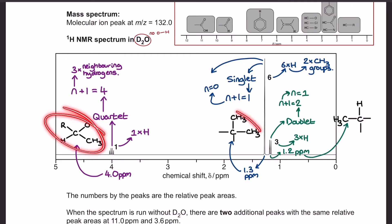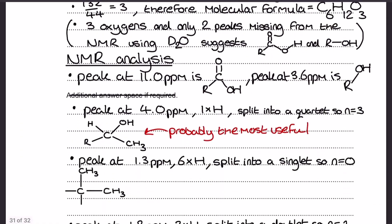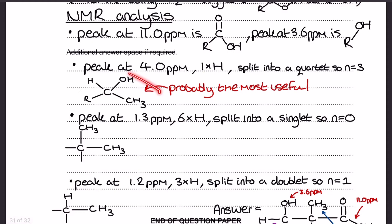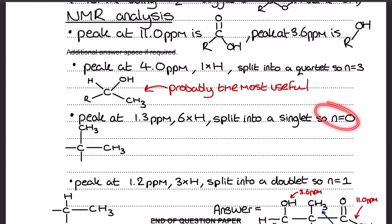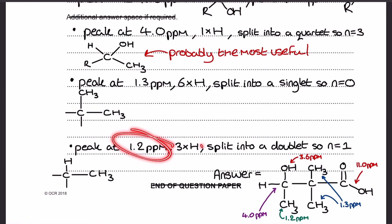My structure pieces laid out clearly are crucial to getting marks in the level of response. In my full written NMR analysis section, I've included structure suggestions after each bullet point. Peak at 11 ppm: suggested carboxylic acid group. Peak at 3.6 ppm: alcohol. Peak at 4.0 ppm: 1 hydrogen, quartet, N=3 — here's my CH piece. Peak at 1.3 ppm: 6 hydrogens, singlet, N=0 — two CH3 groups bonded to a carbon with no hydrogens. Peak at 1.2 ppm: 3 hydrogens, doublet, N=1 — one hydrogen on the next carbon up, confirming the CH3 bonded to the CH.